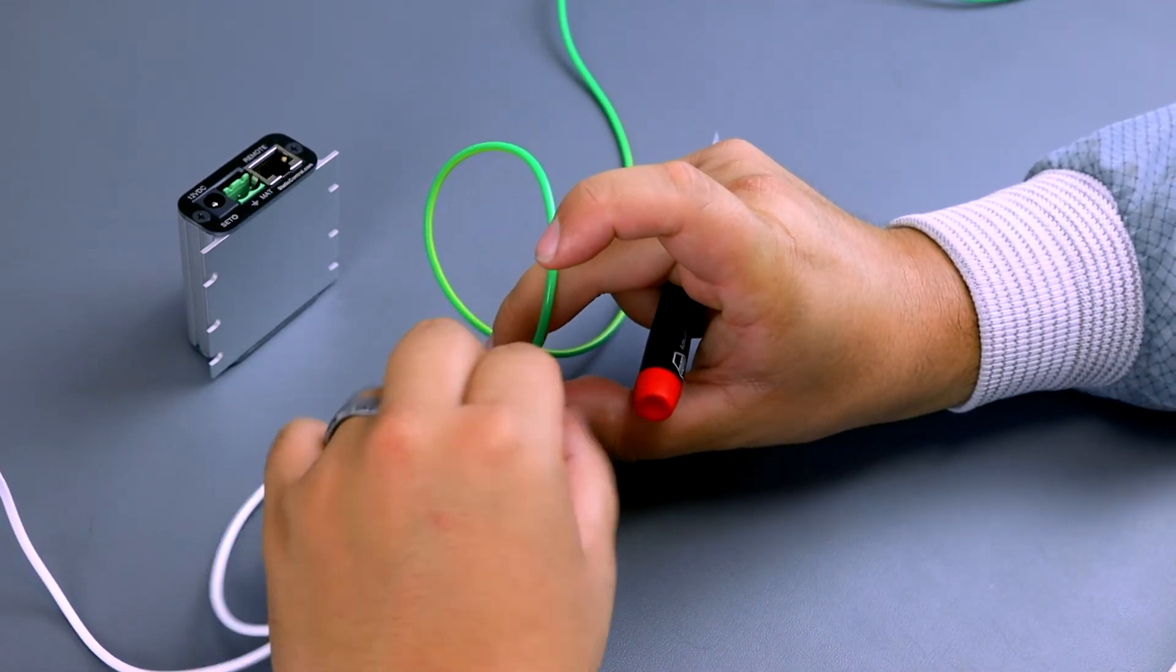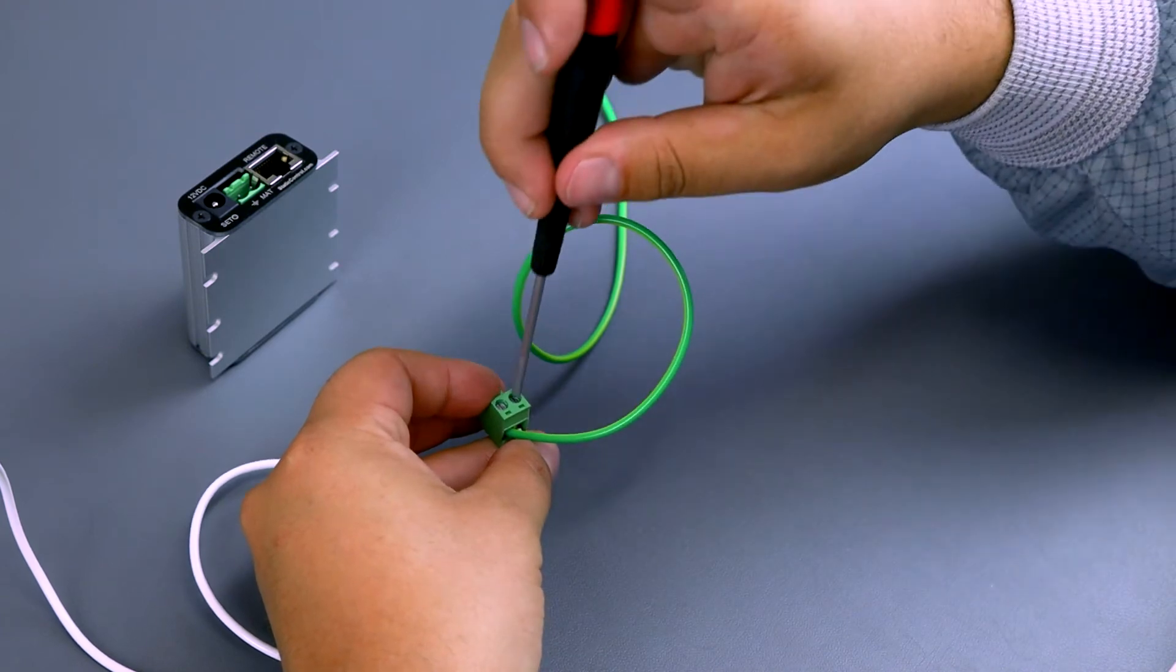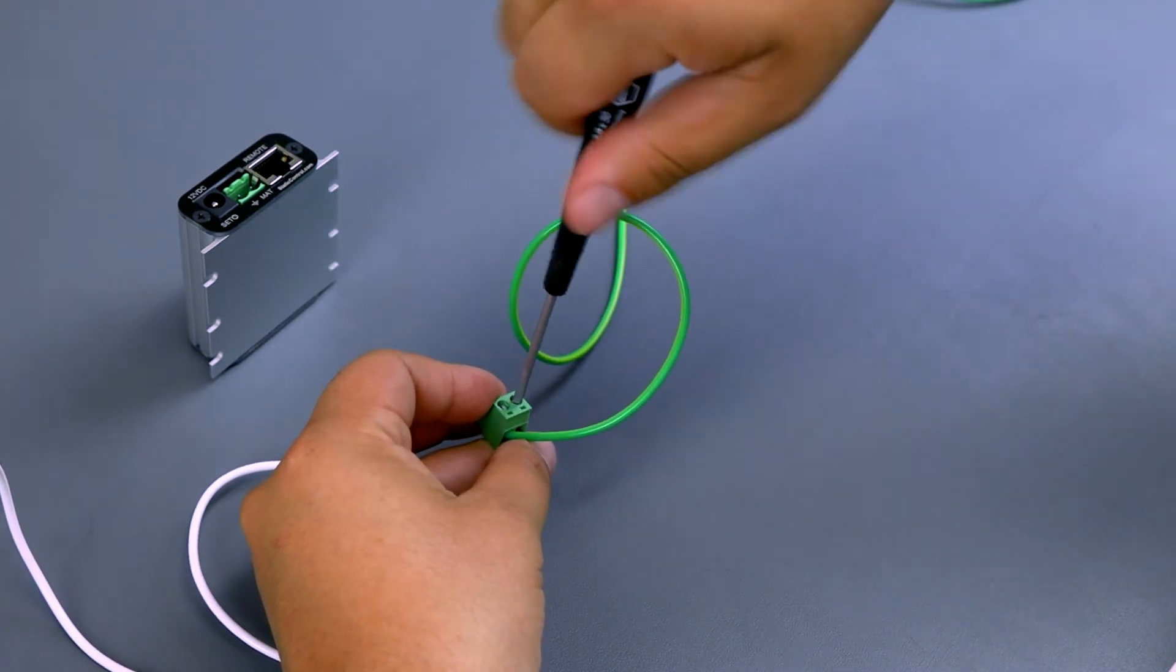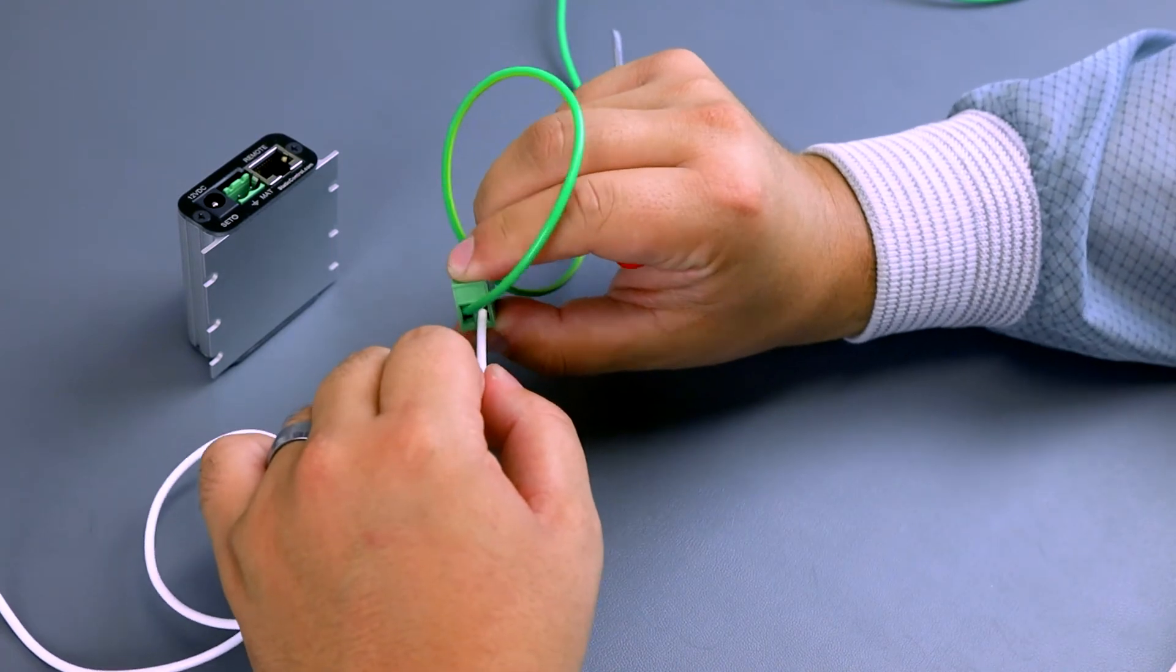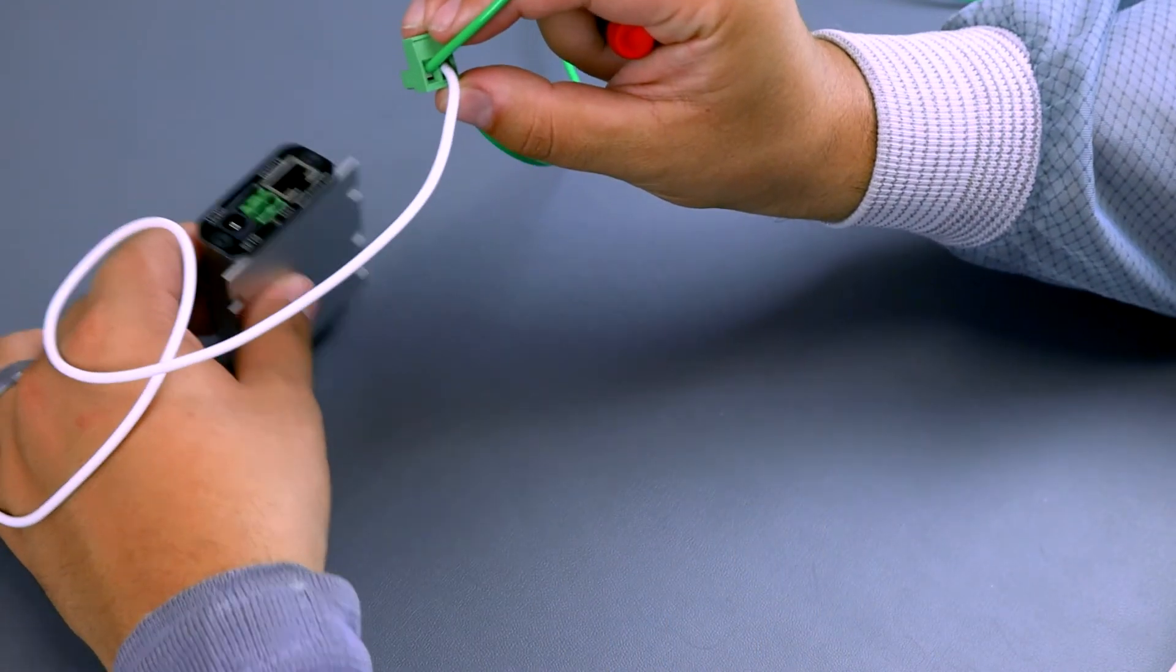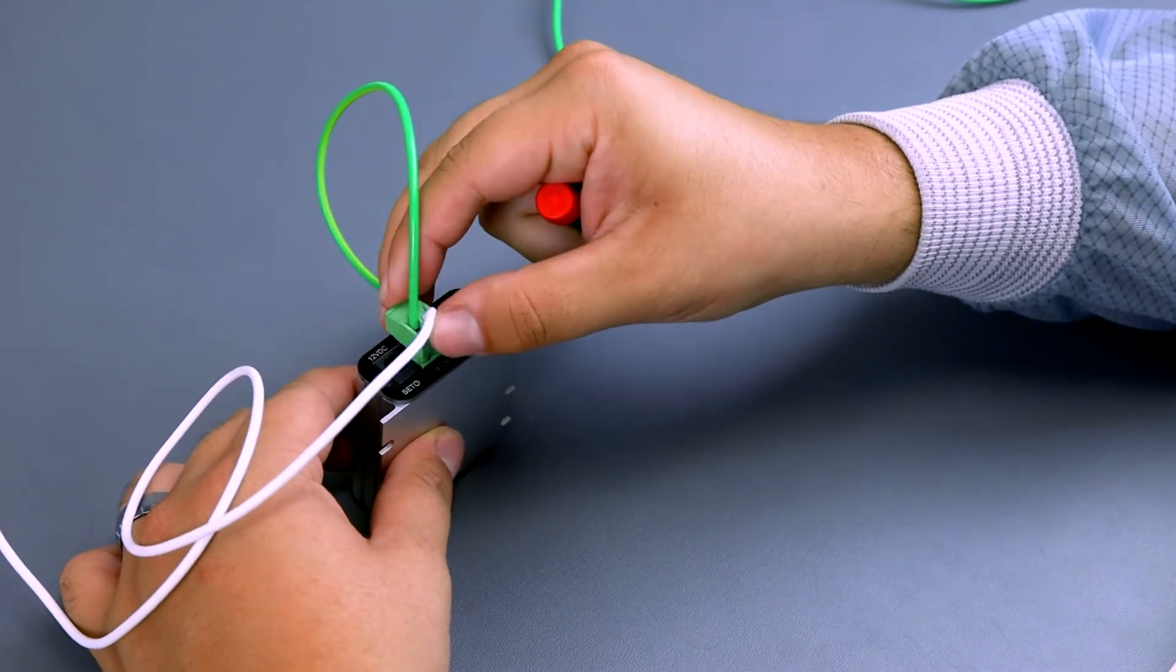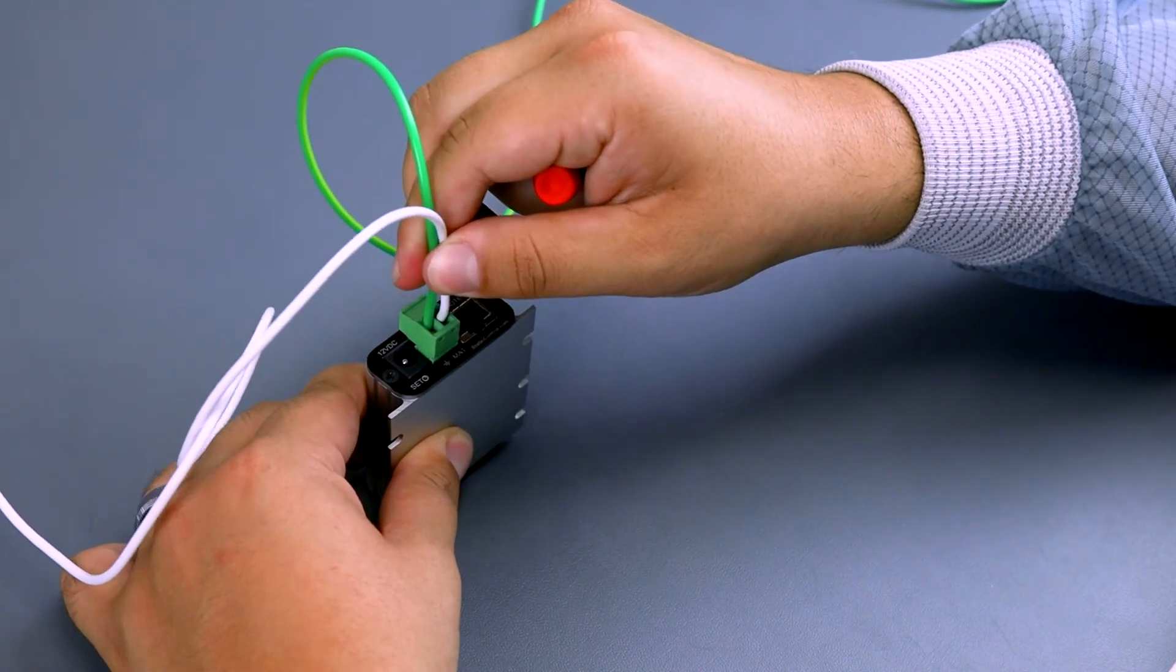Once both the white mat monitor cord and the green monitor ground cord have been installed into the terminal block, install the terminal block into the back of the 724 Plus Monitor. Make sure to plug the block into the correct orientation. The back of the monitor will specify which connection is for the ground and which one is for the mat monitor.